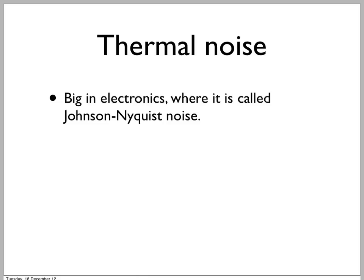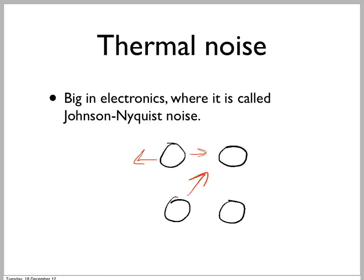One is thermal noise. What is thermal noise? Well, matter is made of atoms. And unless the temperature is absolute zero, they are always moving — vibrating backwards and forwards, wiggling around in different directions, coming towards us and away from us. This has many consequences.